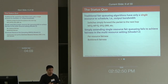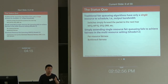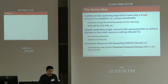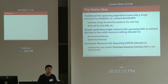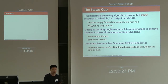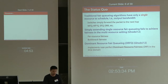For example, per-resource fairness or bottleneck fairness — where you let flows equally share the bottleneck resource of the middlebox — does not work. A recent paper proposed a multi-resource fair queuing algorithm called Dominant Resource Fair Queuing, or DIFQ. It can be shown that this algorithm implements near-perfect Dominant Resource Fairness, or DRF, in the time domain. DIFQ is currently the only multi-resource fair queuing algorithm that has been proposed.